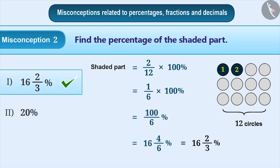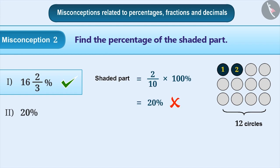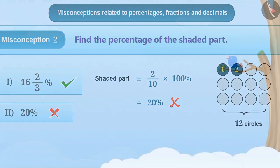Sometimes, while finding percent, students consider the shaded part as the numerator and the part which is not shaded as the denominator. By doing so, they write the fraction for the shaded part as 2 by 10. Then they convert it into percentage by multiplying it with 100, due to which the result obtained will be 20%, which is incorrect. Therefore, option 2 is incorrect.